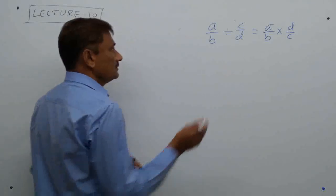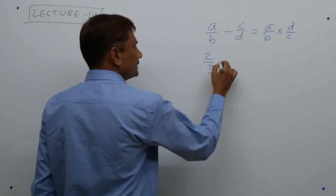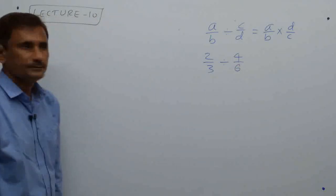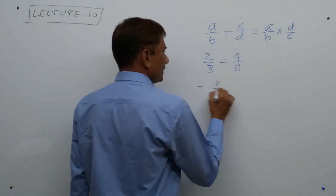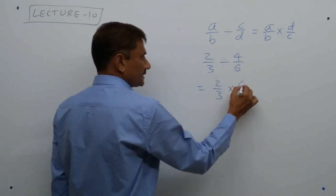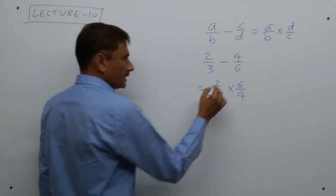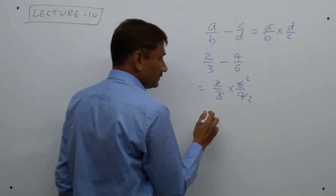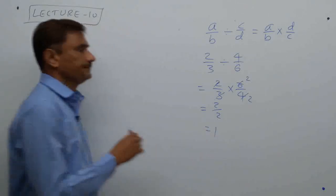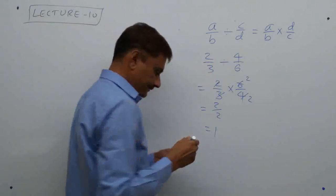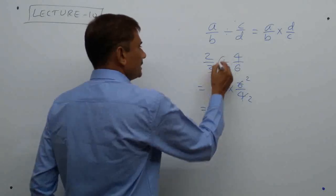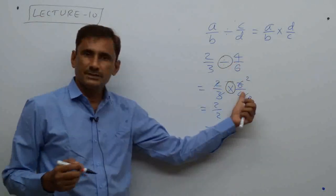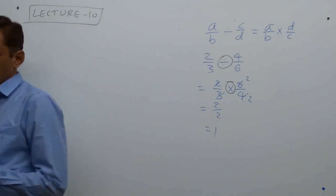For example, suppose 2/3 is divided by 6/4. Then it becomes 2/3 multiplied by 4/6. We can cancel — 2 and 2 cancel in numerator and denominator — so we get 1/... simplifying to a rational result. That is how the division sign is converted into a multiplication sign.